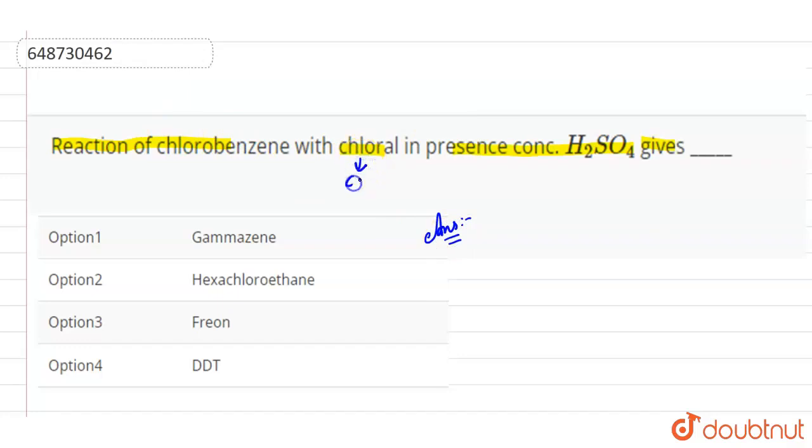As we know, chloral is CCl3CHO. The molecular formula of chloral is CCl3CHO. And when it reacts with chlorobenzene in the presence of concentrated H2SO4, then what happens? A dehydration reaction will take place.